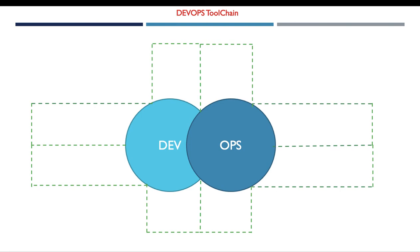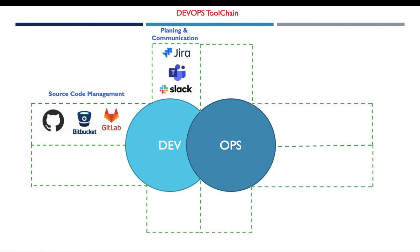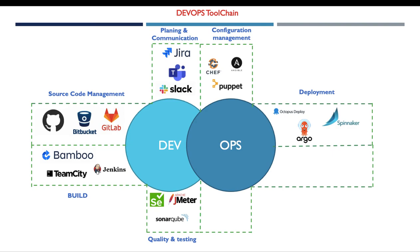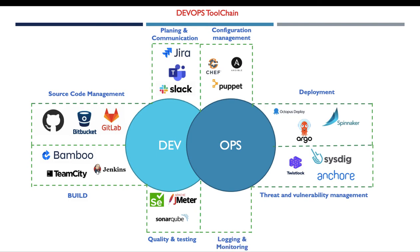Now let's see the DevOps tool chain. For the planning and communication phase, we find Jira, Microsoft Teams, and Slack. For source code management, we find GitHub, Bitbucket, and GitLab. For build, we find Bamboo, TeamCity, and Jenkins. For testing and quality, we find SonarQube, Selenium, and Apache JMeter. For configuration management, we find Chef, Ansible, and Puppet. For deployment, we find Octopus Deploy, Spinnaker, and Argo. For threat and vulnerability management, we find Twistlock, Sysdig, and Anchore. And for logging and monitoring, we find Nagios, New Relic, and Grafana.